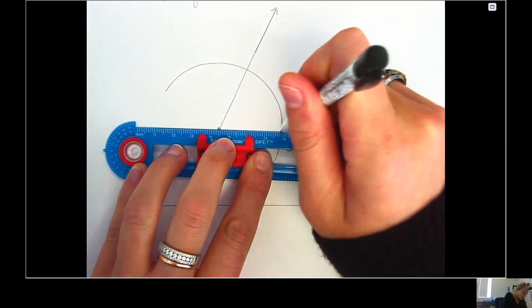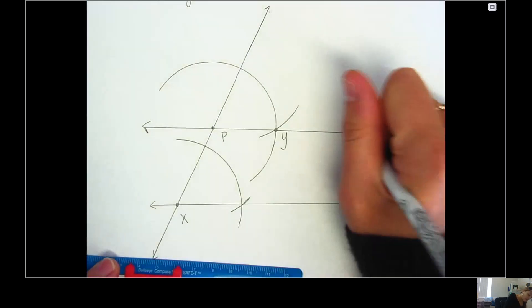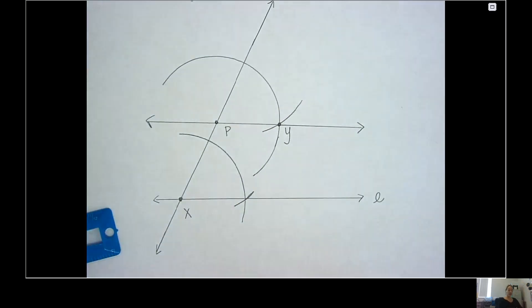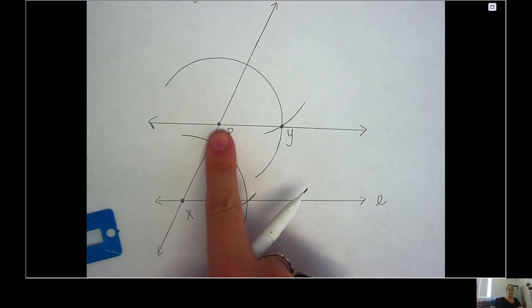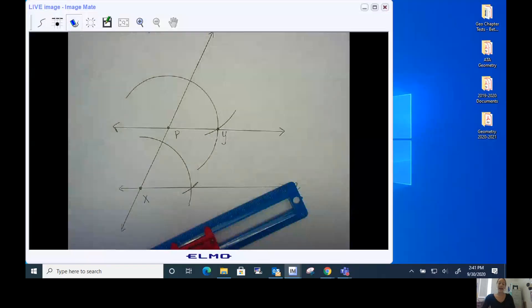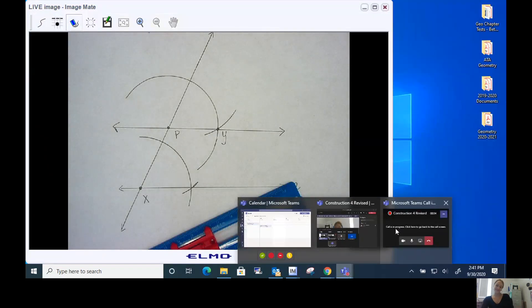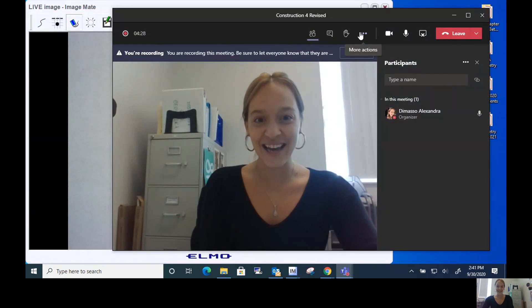Oopsies, I moved it just a smidge, but I have now created two parallel lines that went through a given point P. So go ahead and pause the video and give it a try. Okay, give it a try.